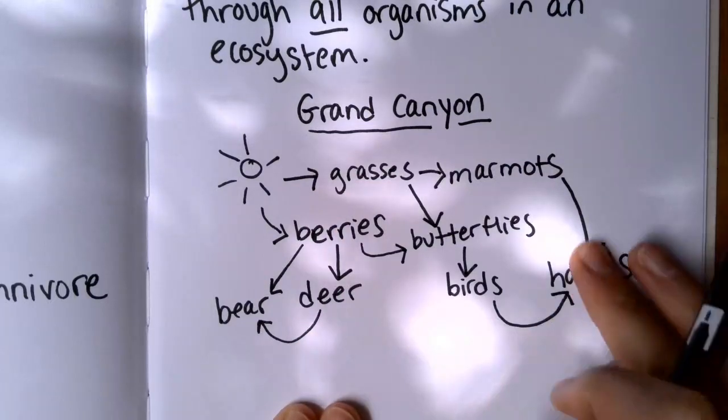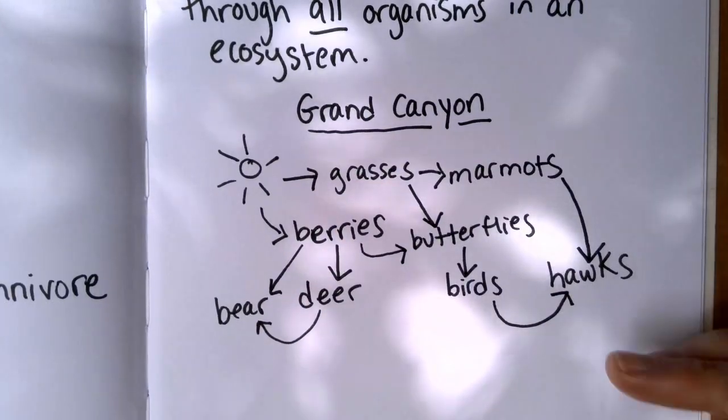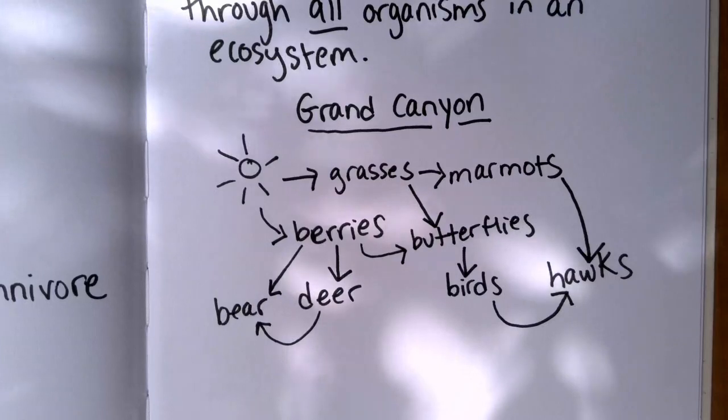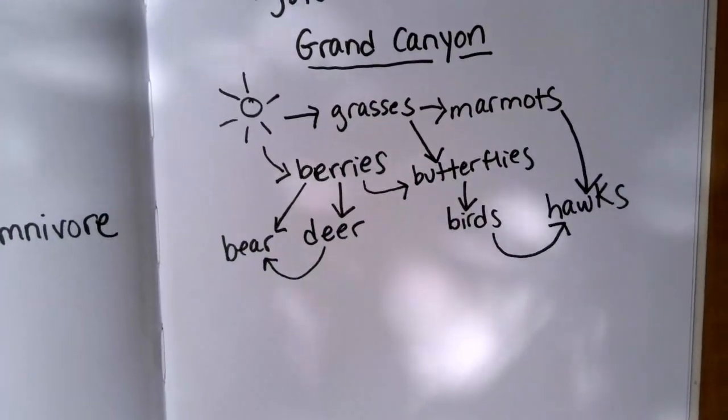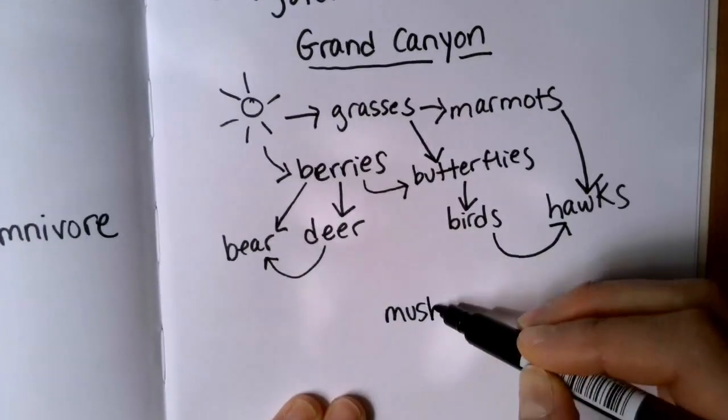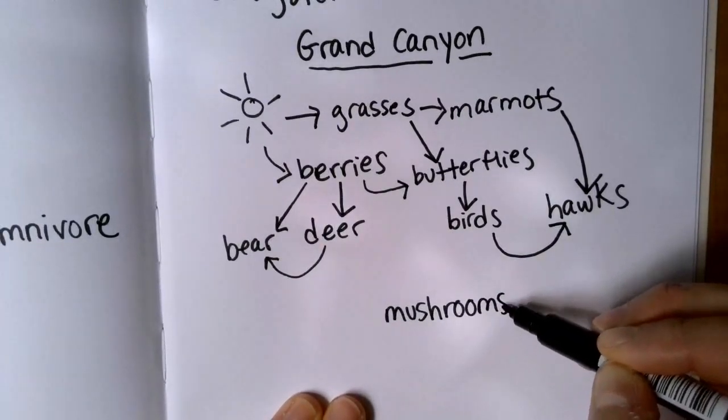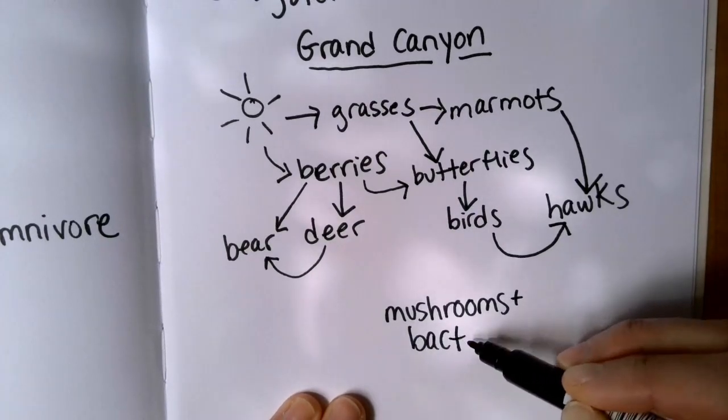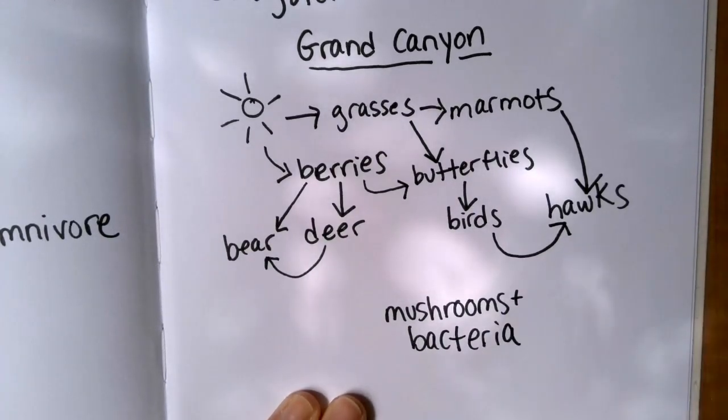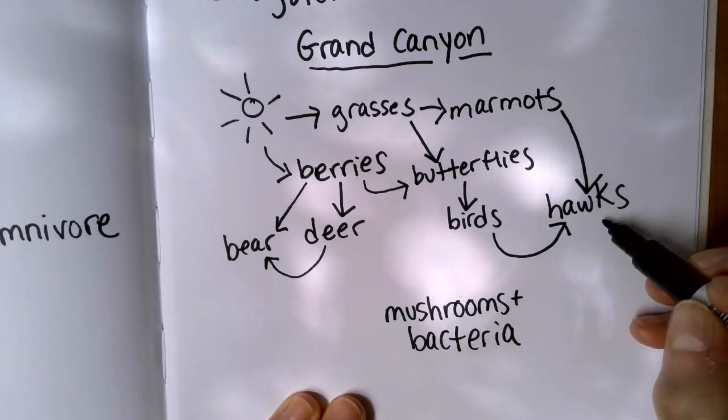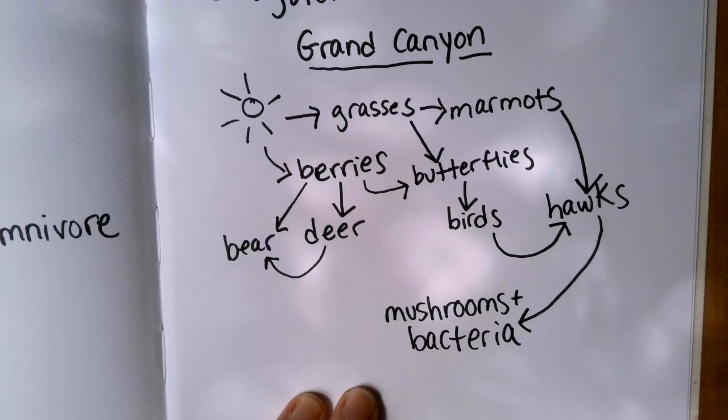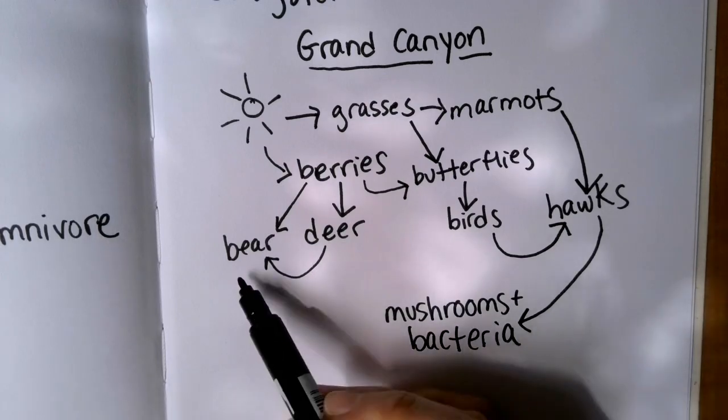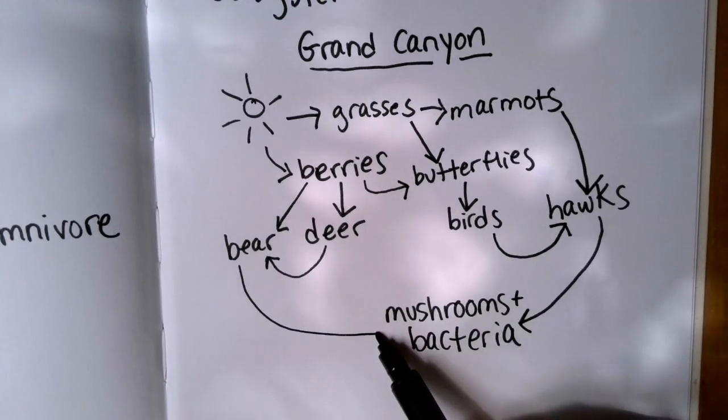The last thing that we want to add are our decomposers. I'm going to add the decomposers down here. They're mushrooms and bacteria. So I'm going to draw, since nothing is eating the hawks, hawks will probably die and then their bodies will fall to the ground. And then the same with bears. There's nothing here that's going to eat a bear. So when they die, their bodies will just stay on the ground. And that's showing that those bodies will be consumed by the mushrooms and bacteria.